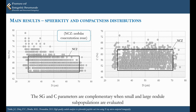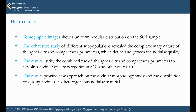Regarding the results of the ferricity and compactness distributions, these plots show the measurement of each nodule, which is represented by a gray circle. From these plots, a nodular concentration zone was defined, and the complementary behavior of both parameters is observed by evaluating small and large nodules.